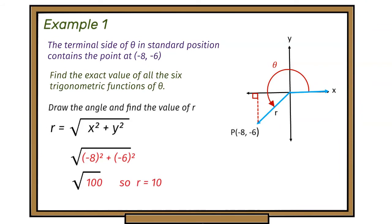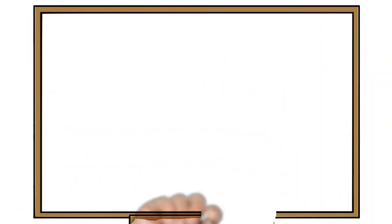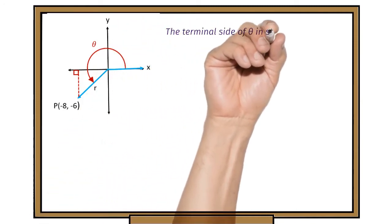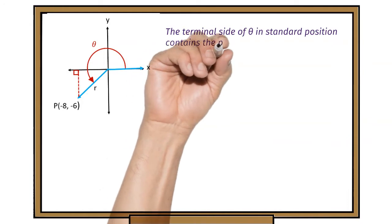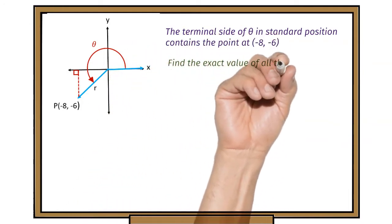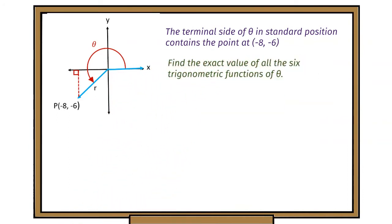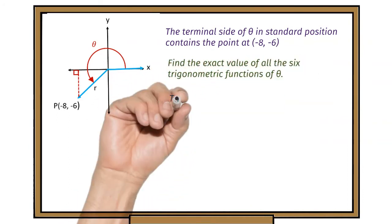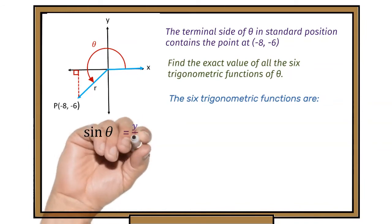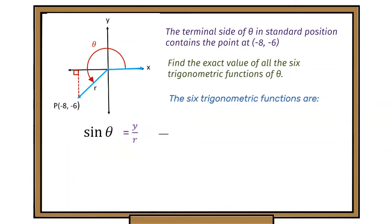So r is 10. We're going to use those values and substitute them into our formula for each of our functions to find the values. We know x is −8, y is −6, and r is 10. Sine of theta is y divided by r, which gives us −6 over 10.